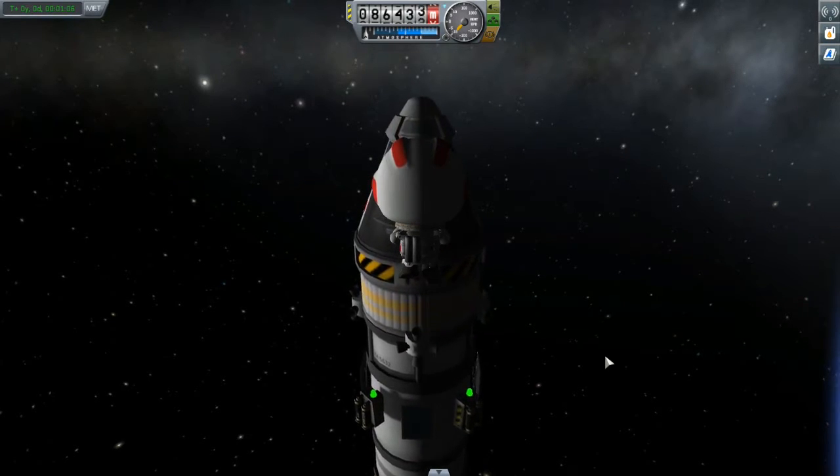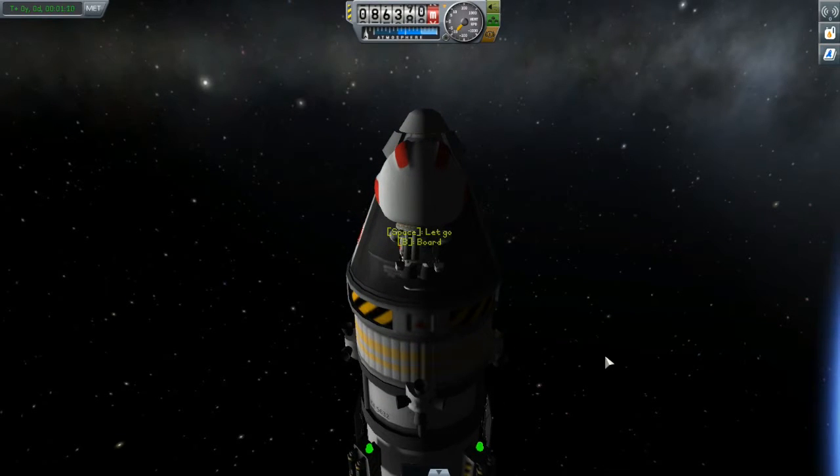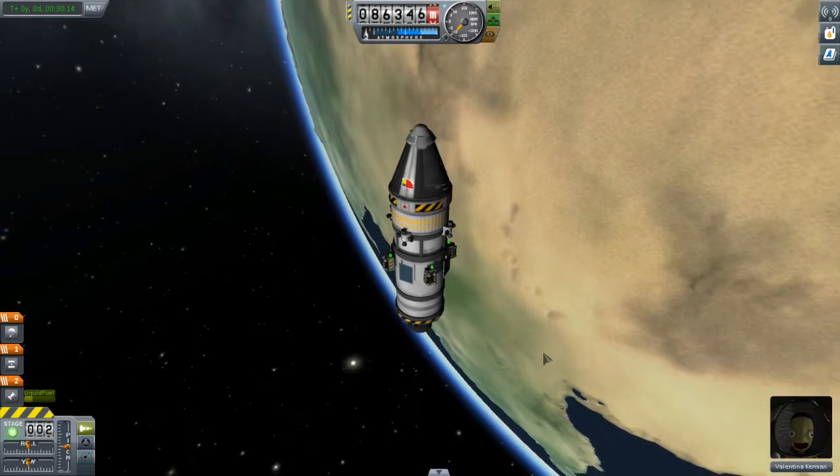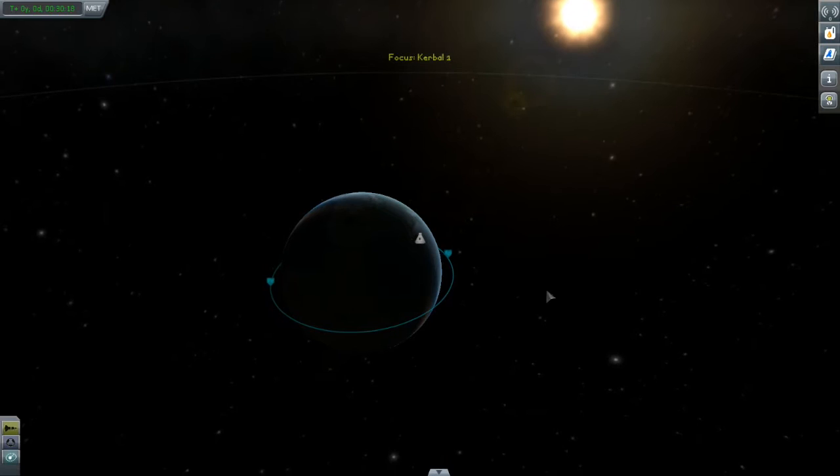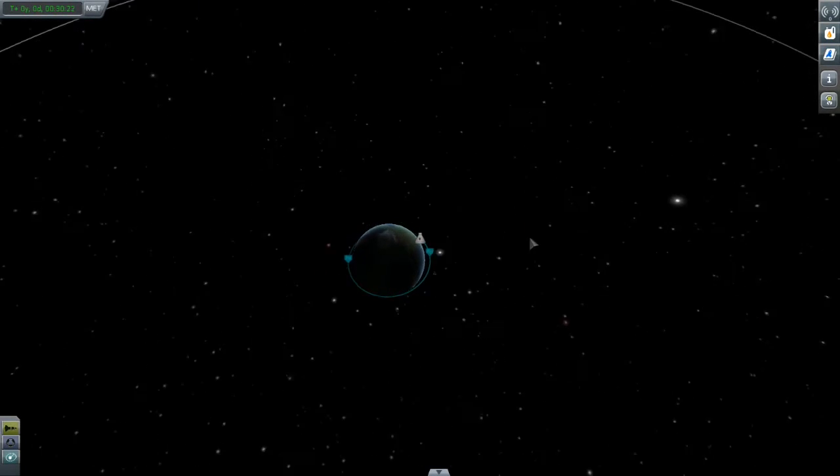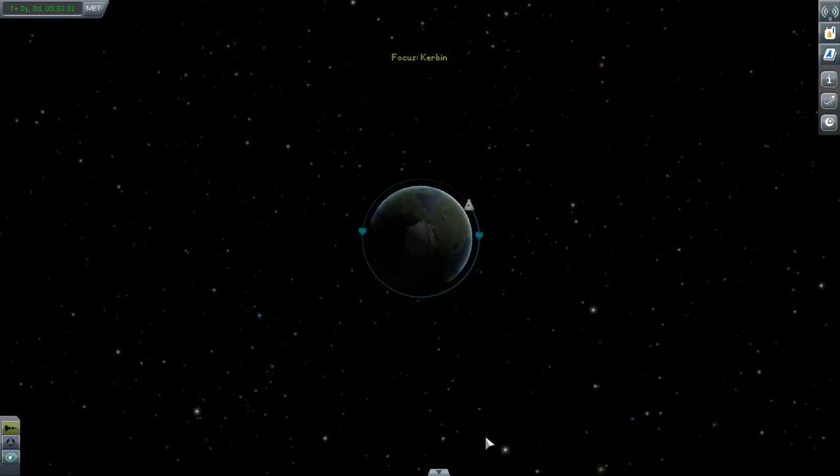But before I do that, I want to take a moment to talk about energy, because understanding orbital mechanics is all about understanding energy. An object in an orbit possesses two kinds of energy. The first is a result of its velocity. Quite simply, the faster an object is going, the more energy it possesses. We call this kinetic energy.